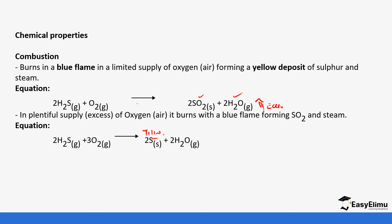In excess or plentiful air, sulfur burns completely in oxygen to form sulfur dioxide. But in a limited amount of air, it only forms sulfur solid. Be able to see the difference in the two equations — the first is for excess air and the second is for limited air.